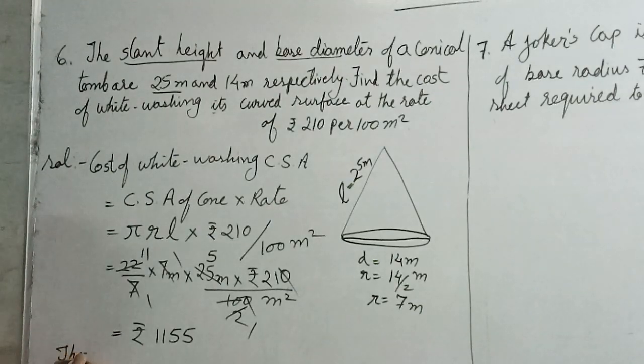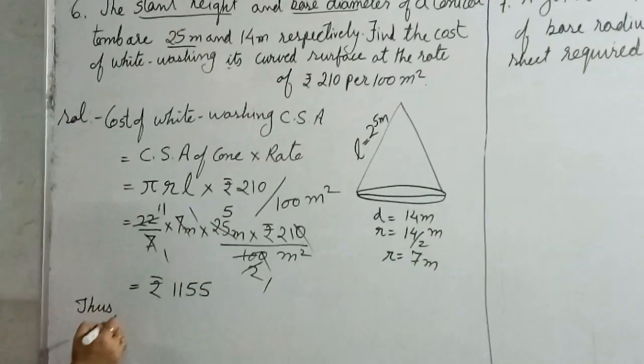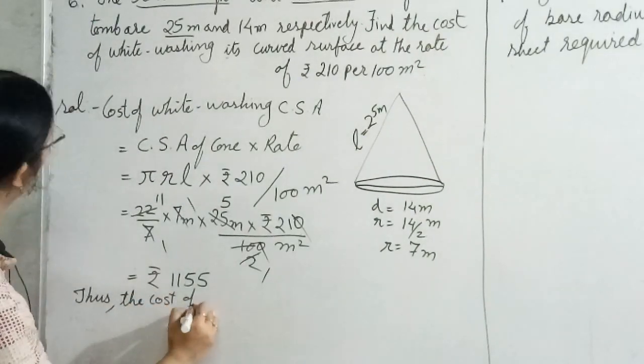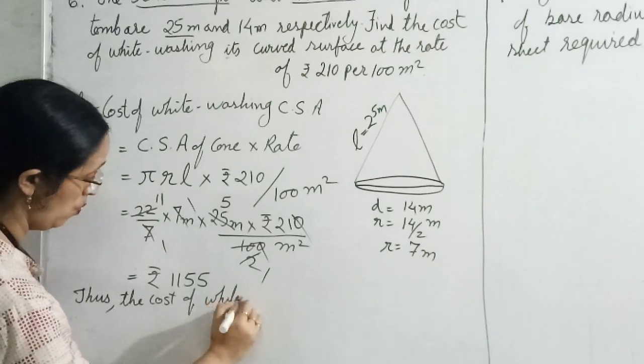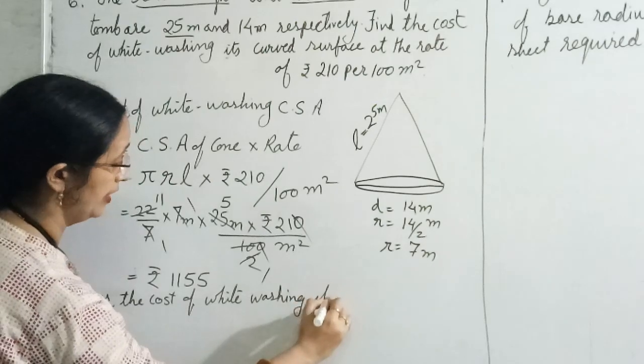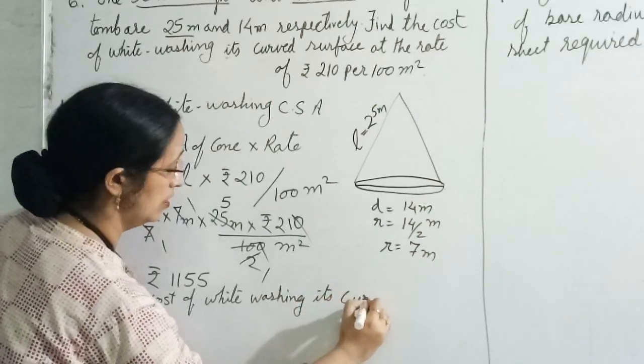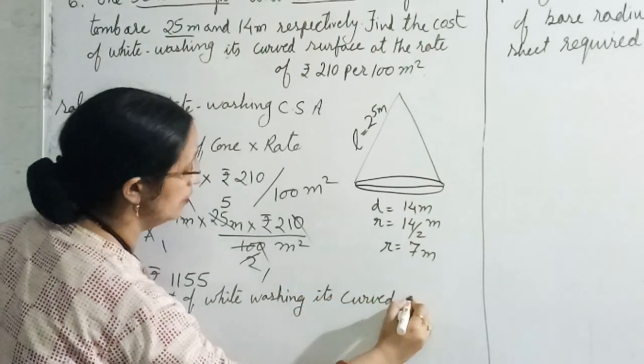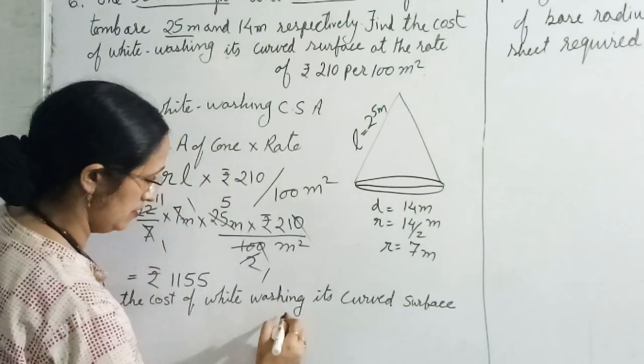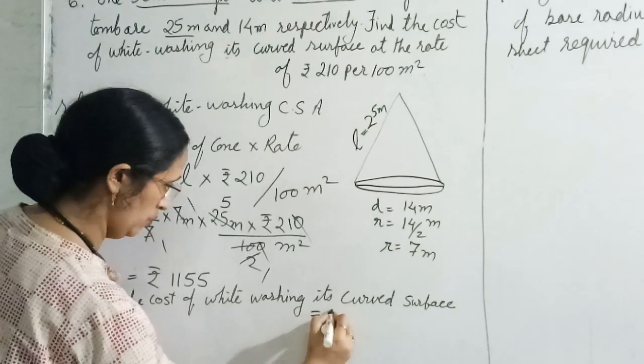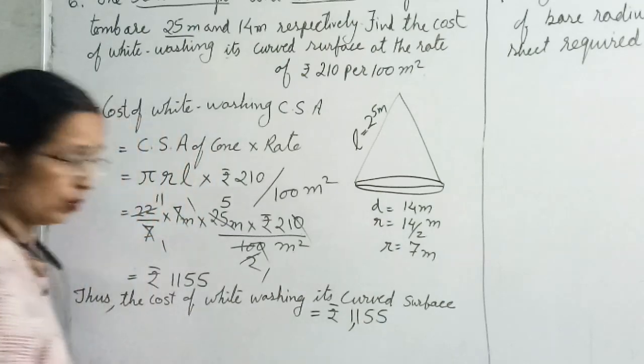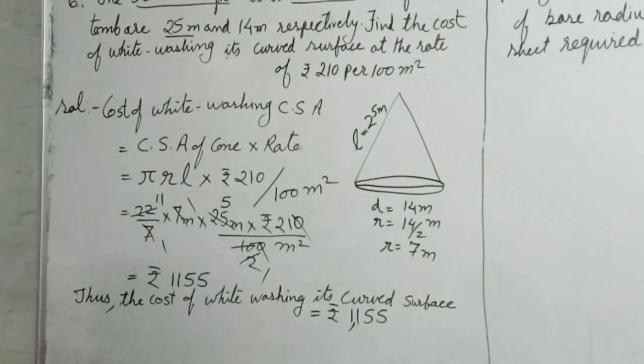Thus, last line you will write: thus, the cost of whitewashing its curved surface is equals to rupees 1155.